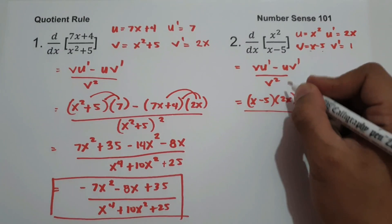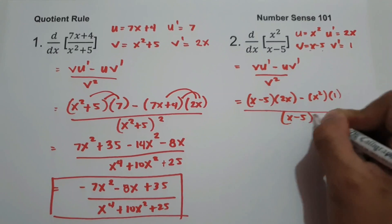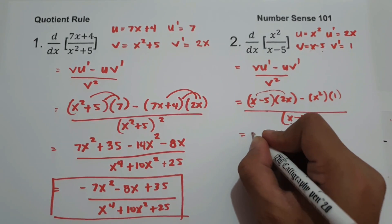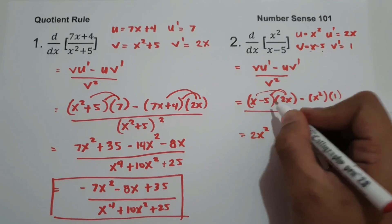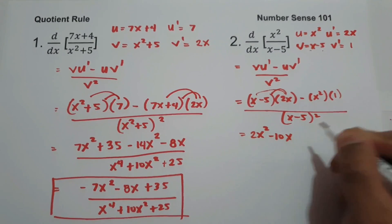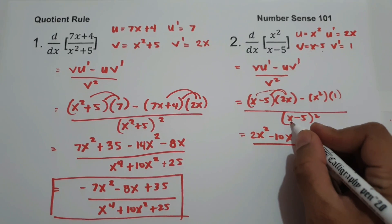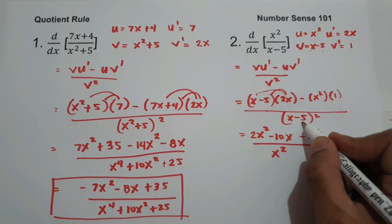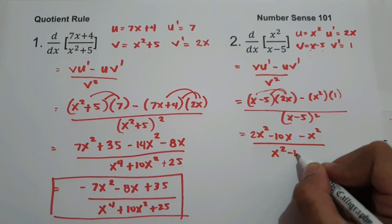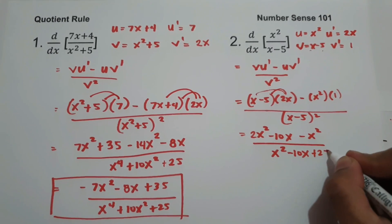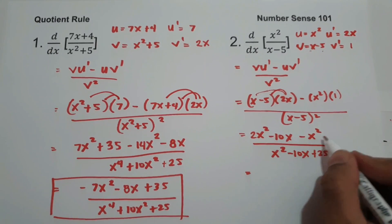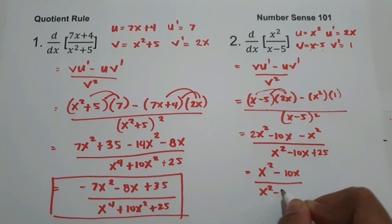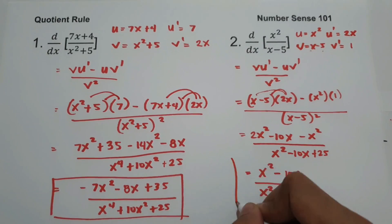Simplifying the numerator: 2x times x is 2x², and 2x times negative 5 is negative 10x, then subtract x². For the denominator, (x minus 5)² expands to x² minus 10x plus 25. Combining numerator terms, 2x² minus x² is x². So the final answer is: (x² minus 10x) over (x² minus 10x + 25).